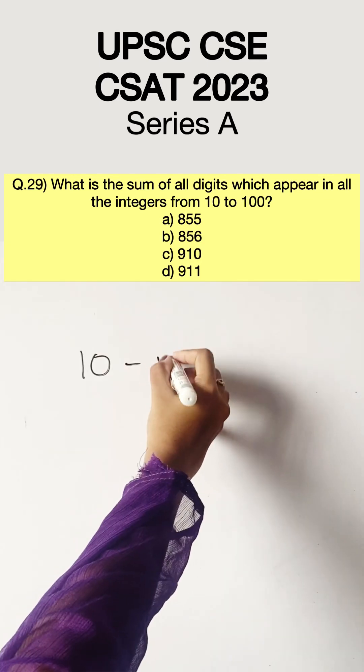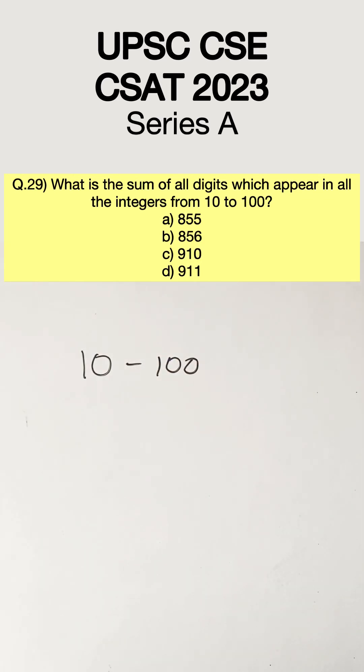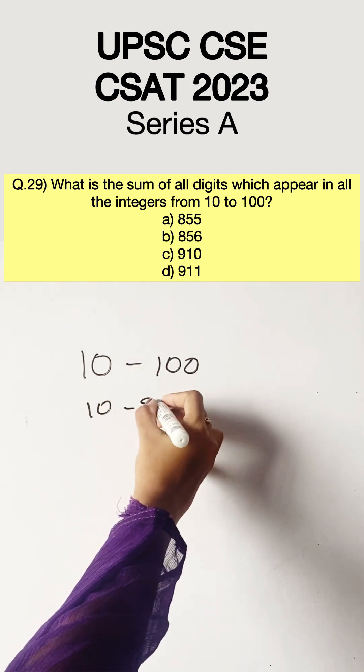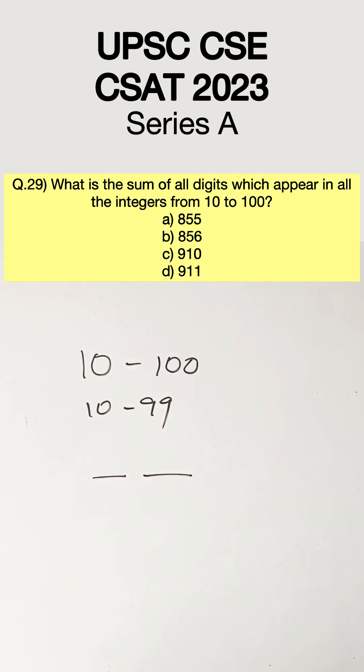We are supposed to find the sum of all the digits which appear in all the integers from 10 to 100. Let us first find out the sum of the digits from 10 to 99.